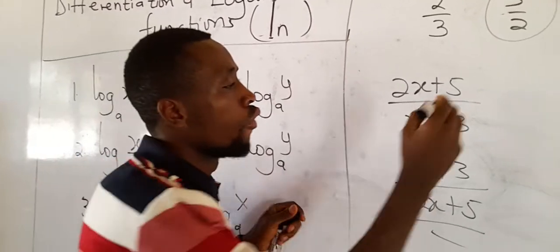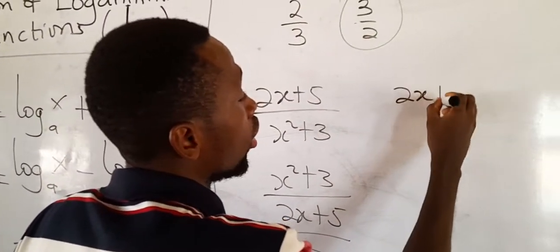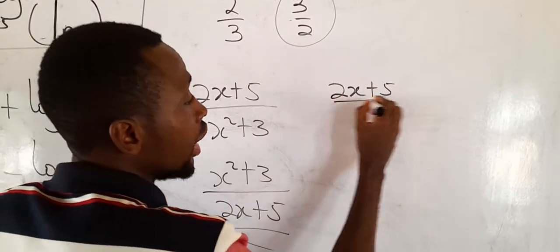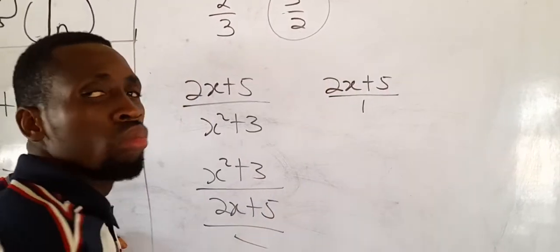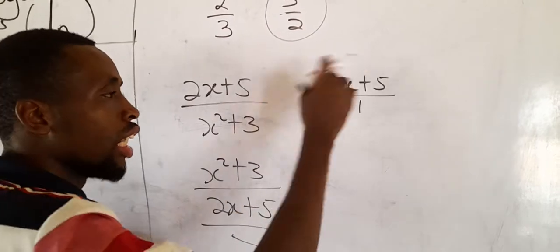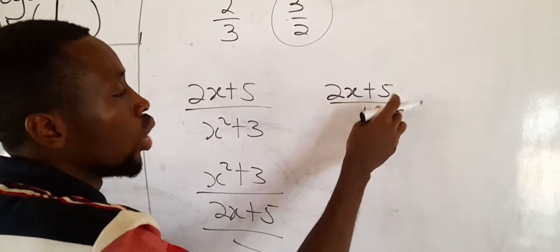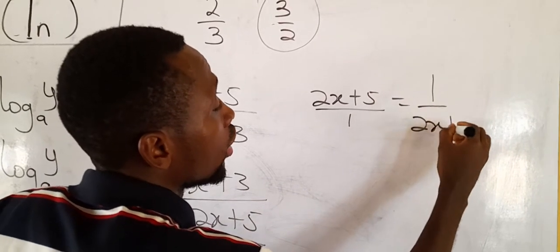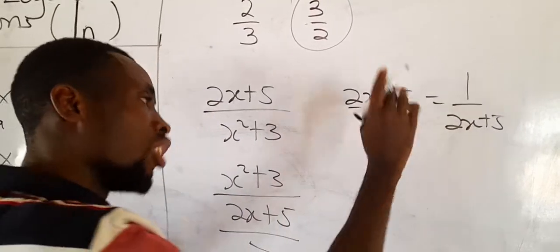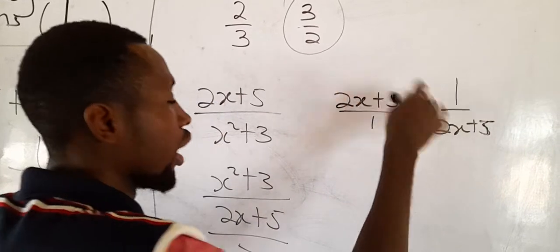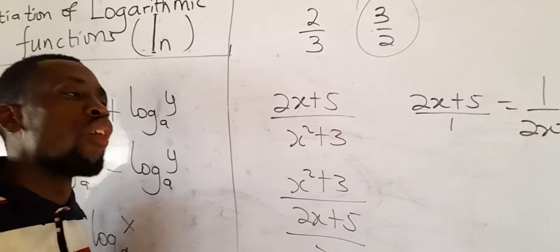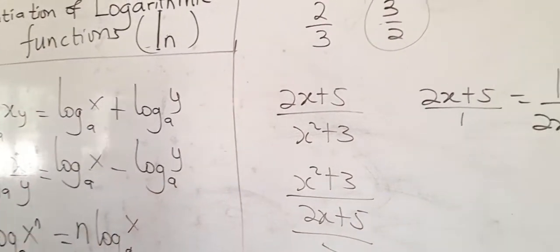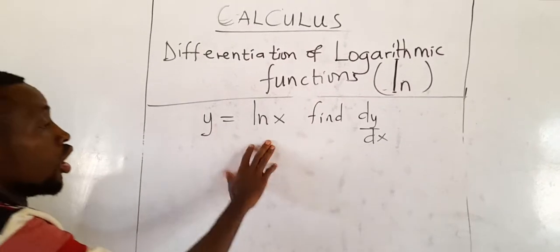If I have just 2x + 5 and I ask you to reciprocate it — the denominator here is 1, since any number written alone has denominator 1 — when I ask you to reciprocate it, it will be 1/(2x + 5). Know this very well so that when we come to differentiation, you will not have any problem.